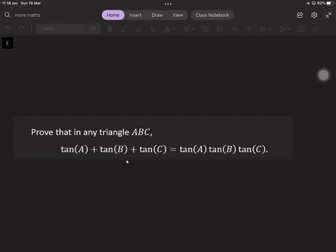In this video we'll be having a look at the following trigonometry problem. Prove that in any triangle ABC, tan(A) + tan(B) + tan(C) is equal to the product tan(A)tan(B)tan(C).